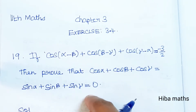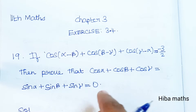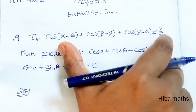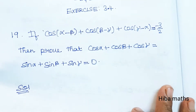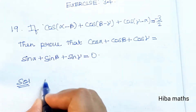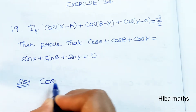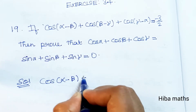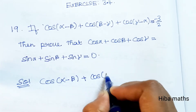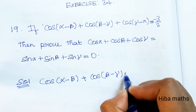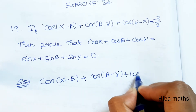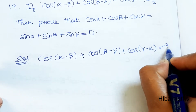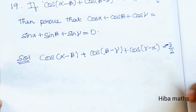If we want to prove that cos(α - β) + cos(β - γ) + cos(γ - α) is equal to -3/2, it is given as minus 3 by 2.